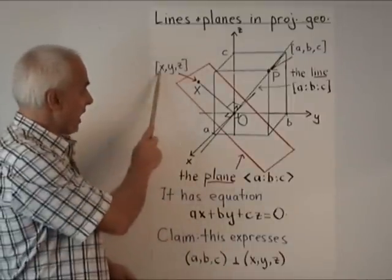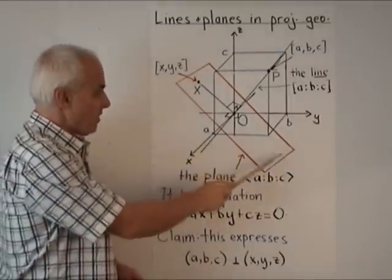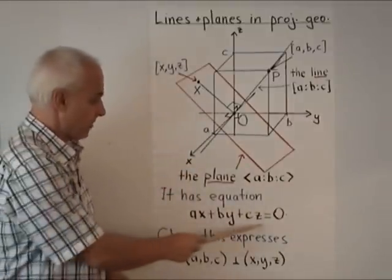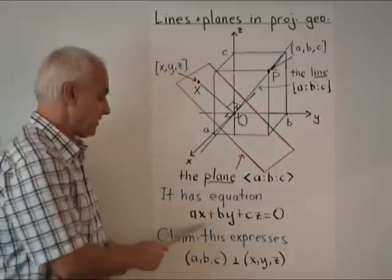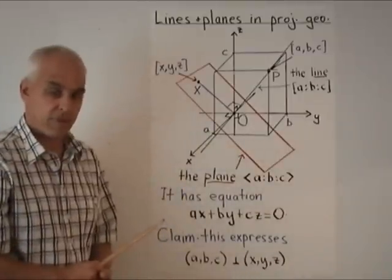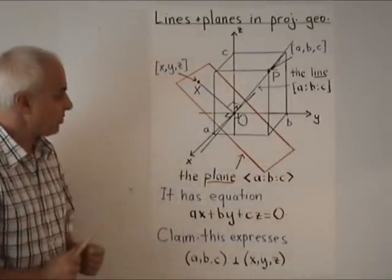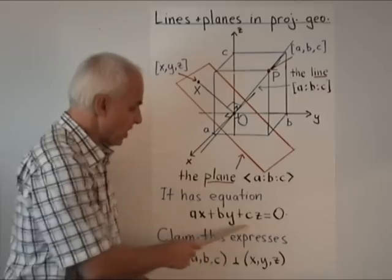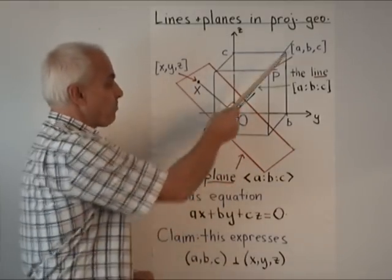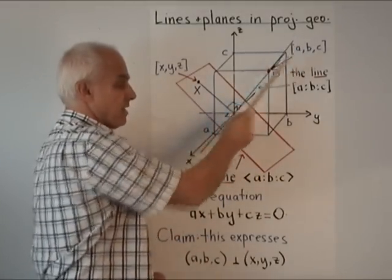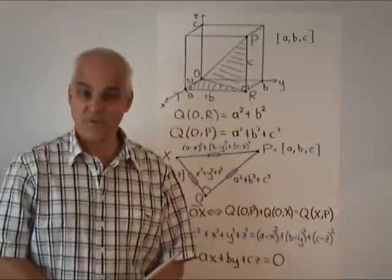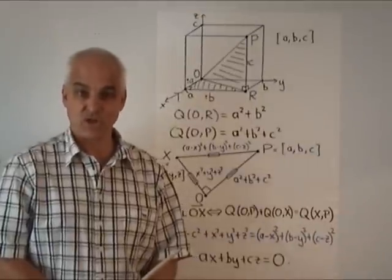And it has an ordinary equation of the form AX plus BY plus CZ equals zero. In other words, any point X, Y, and Z that lies on this plane satisfies this relation. And conversely, everything that satisfies this relation is a point on the plane. And our first order of business is to convince you that this equation exactly describes the plane that is perpendicular to the point A, B, C, or perpendicular to that vector emanating from O to P. So let's review a few things about three-dimensional geometry.